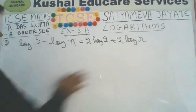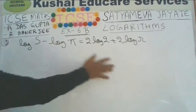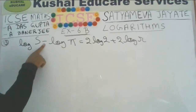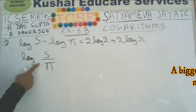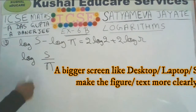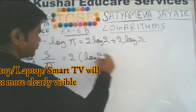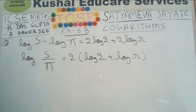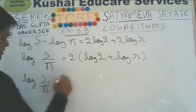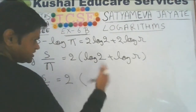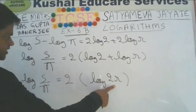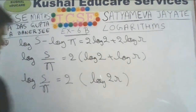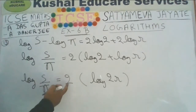The next expression — we have to get rid of the logs and find the original expression. If there is a minus here, in the original expression there must be division. We can write it as log of s minus log of pi. Taking 2 as a common factor: 2 times of log 2 plus log r. This means log of s upon pi equals log of 2r whole squared, since addition means multiplication.